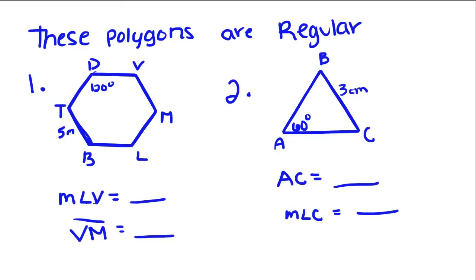This is asking for the measure of angle V. Well, if this is a regular hexagon, that means all the angles have equal measure, so that's 120 degrees. And they want the measure of Vm, or the length of segment Vm, so it has to equal five meters.